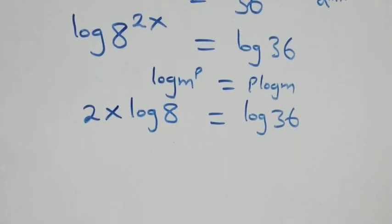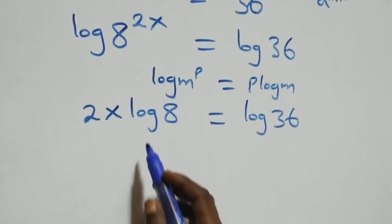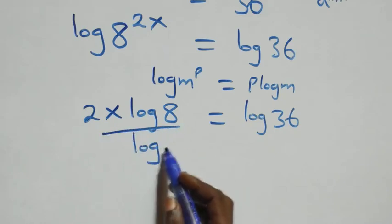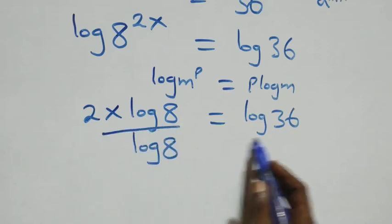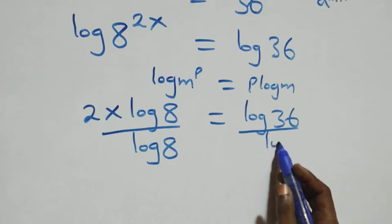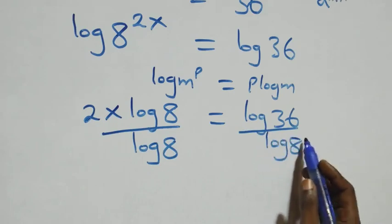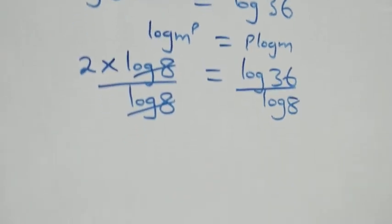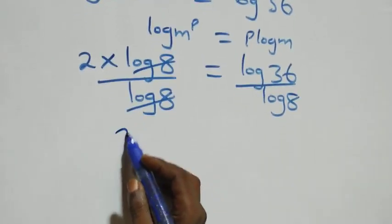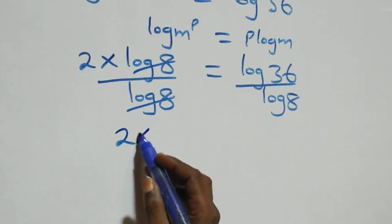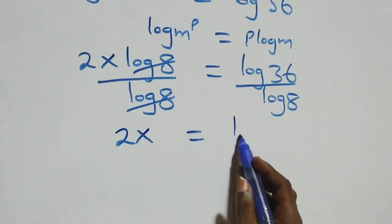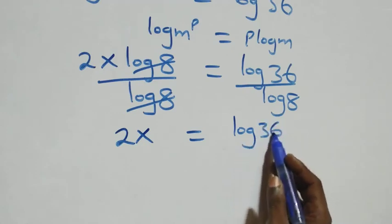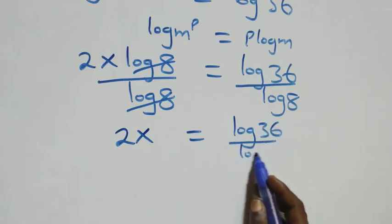Next step, we divide both sides by log 8. We divide this side by log 8 and also divide this side by log 8. The log 8 terms cancel each other, and we are left with 2x equals log 36 over log 8.